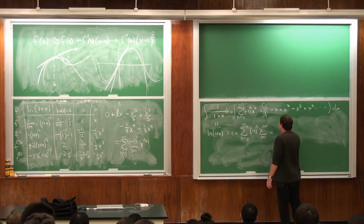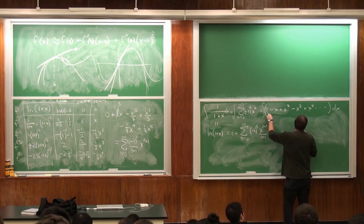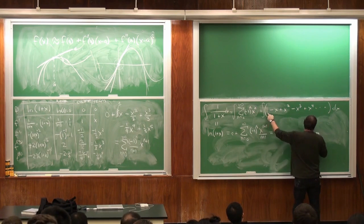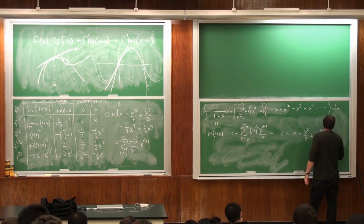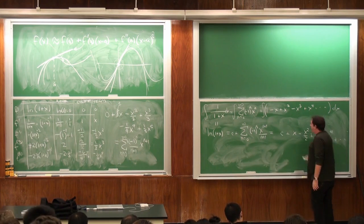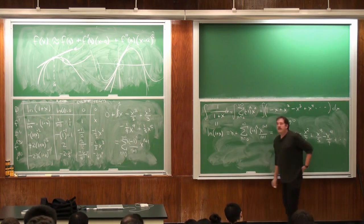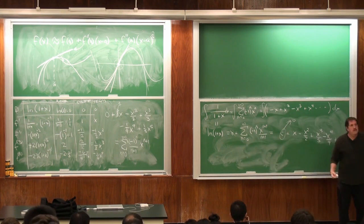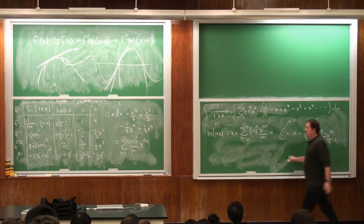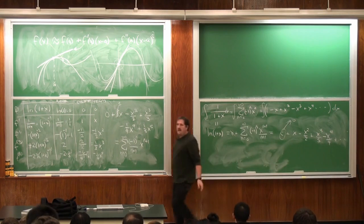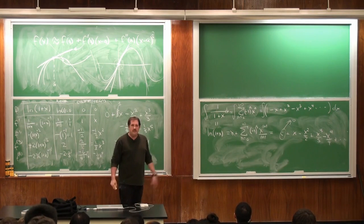The constant here is zero because we know the log of 1 is zero. So we get the same series two different ways — one by computing derivatives directly, one by integrating the geometric series. Of course it's not really two different ways, but it's kind of two different ways.